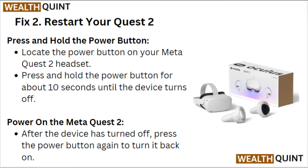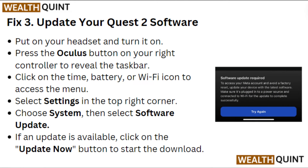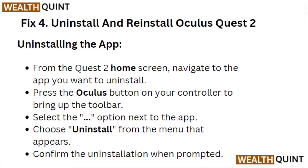Fix 3: update your Quest 2 software. Put on your headset and turn it on. Press the Oculus button on your right controller to reveal the taskbar. Click on the time, battery, or Wi-Fi icon to access the menu. Select Settings in the top right corner, go to System, then select Software Update. If an update is available, click 'Update Now' to start the download.